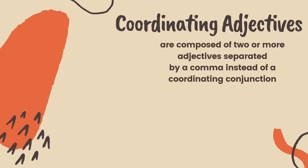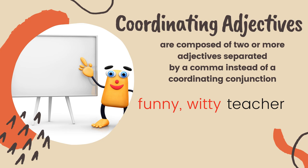Coordinating adjectives are composed of two or more adjectives separated by a comma instead of a coordinating conjunction. Simply put, coordinating adjectives are descriptive words that work in groups — two or more adjectives that band together to modify the same noun. For example, 'funny, witty teacher' — funny and witty are two adjectives that describe the teacher. Another example: 'long, busy day' — long and busy are adjectives that band together to modify the noun day.